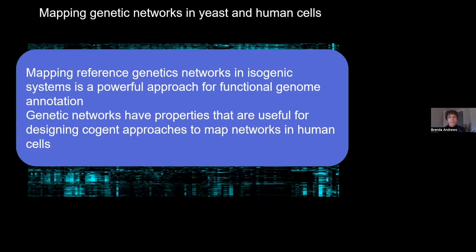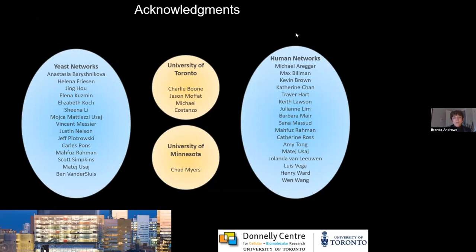I hope I've provided some information about how mapping reference genetic networks in isogenic systems is a powerful approach for functional genome annotation, and that genetic networks have properties useful for designing approaches to map networks in more complicated genetic scenarios like human cell lines. This is a very large, ongoing collaborative project involving labs at the University of Toronto — my lab, Charlie Boone's lab, and Jason Moffitt's lab — all overseen by Michael Costanzo, in close collaboration with Chad Myers and his group at the University of Minnesota. Many people have contributed to these projects over the years.